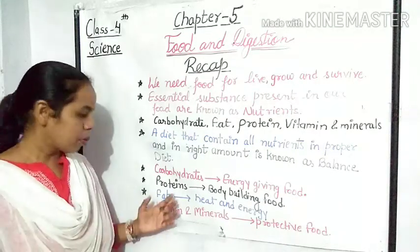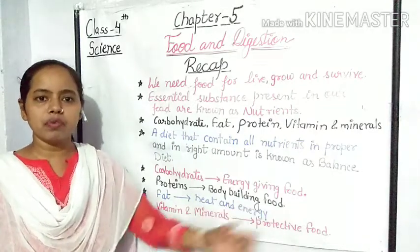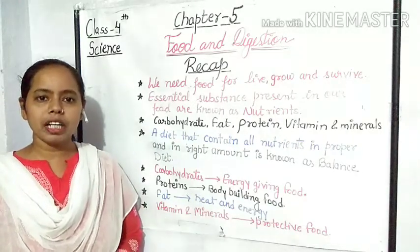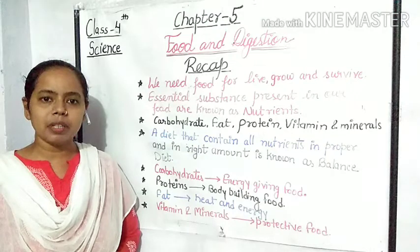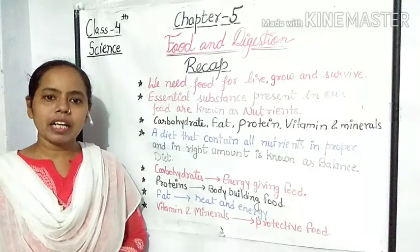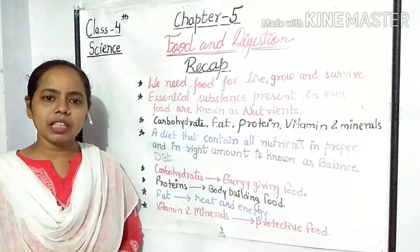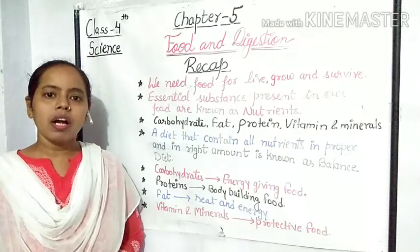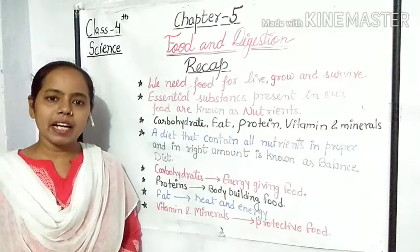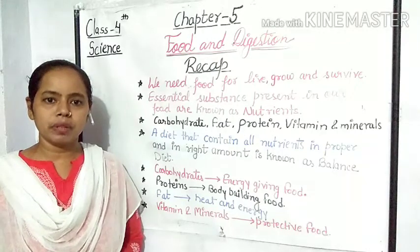The next is proteins. Proteins are known as body-building food. Proteins ko body building food ke naam se bhi jaante hain. Jo grown-up children hote hain, unhein adhiktar aisa bhojan lena chahiye jis mein proteins hon. Pulses, beans, eggs and meat are the examples of protein-rich food.